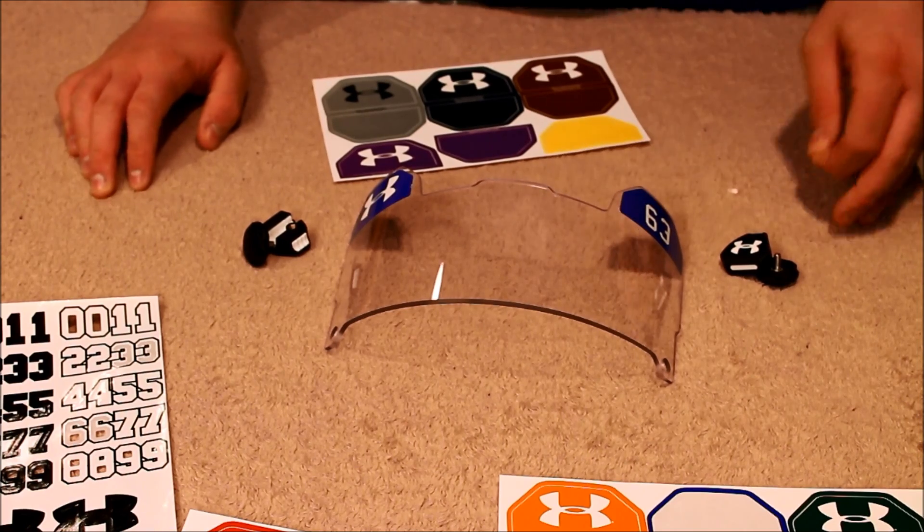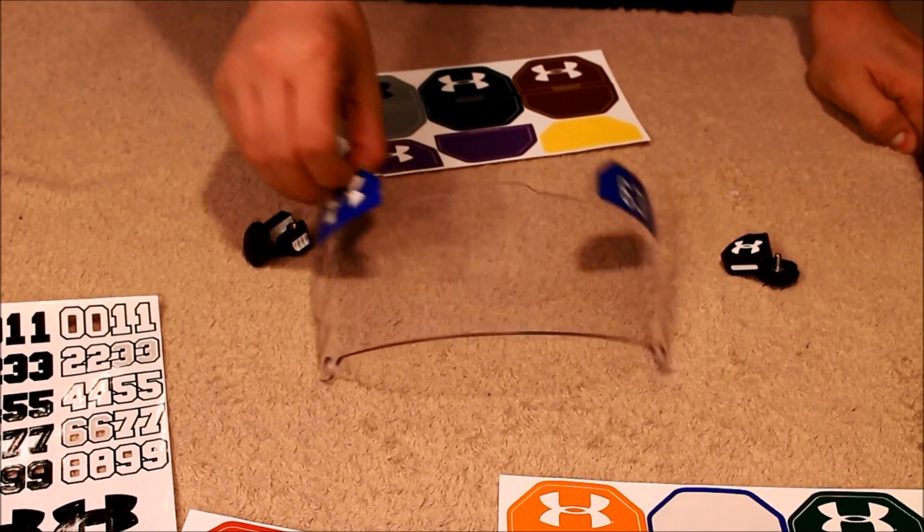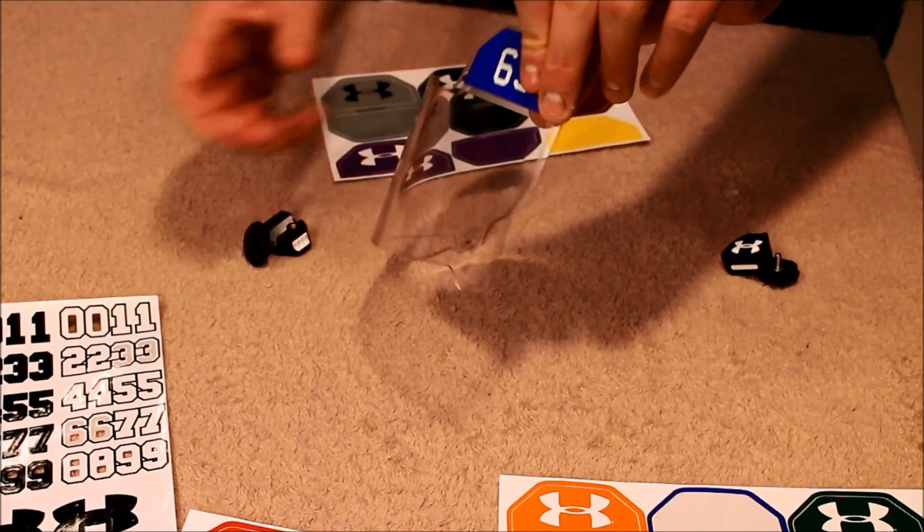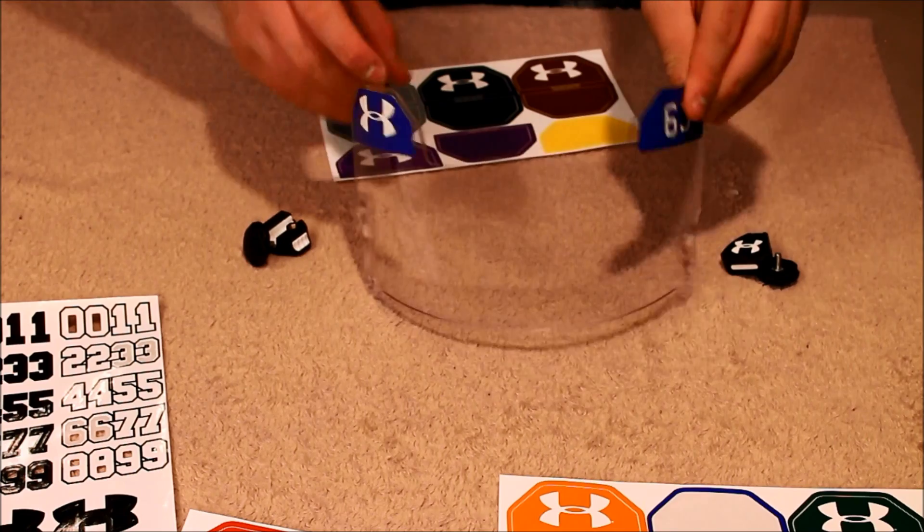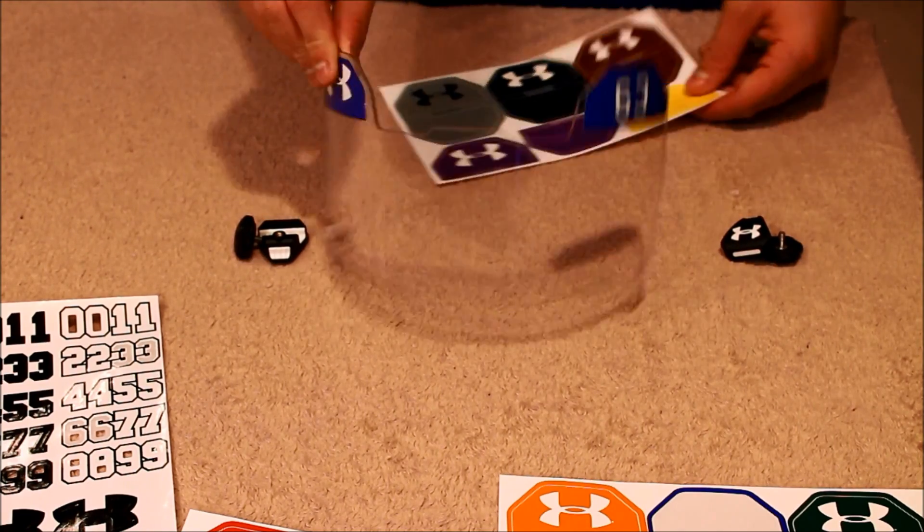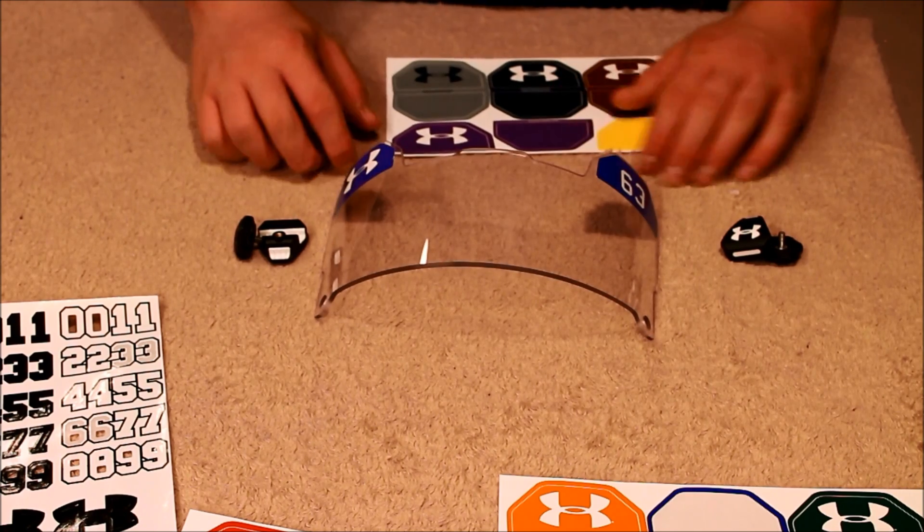So the other two brands of visors most common are Nike, which is exactly like this. As you can see it is straight down. But then there's also Oakley which bubbles to fit a face mask a little better. Some people like that some people don't. This is my only one right now. So that's just what I'm going to give a review on it for.